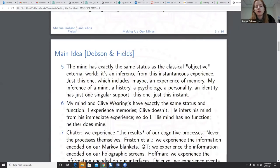So the main idea continued, the mind has exactly the same status as the classical objective external world. It's an inference from this instantaneous experience. Just this one, which includes maybe an experience of memory, an inference of a mind, a history, a psychology, a personality, an identity has just one singular support. Just one this instant. My mind and Clive Waring, who has retrograde amnesia, have exactly the same status and function. I experience memories, Clive doesn't. He infers his mind from his immediate experience, so do I. His mind has no function, neither does mine.